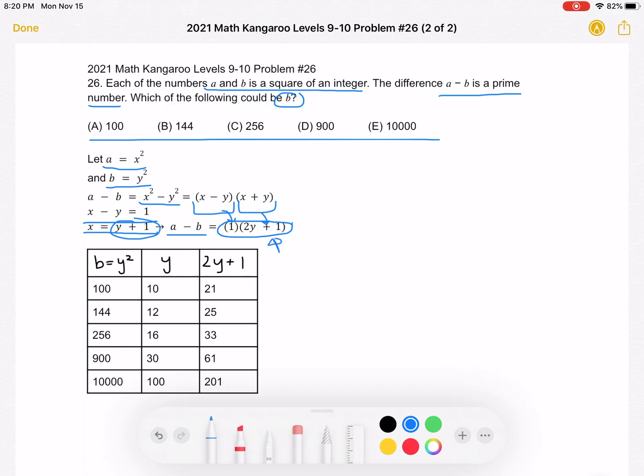this quantity right here, which again is equal to A minus B, which is a prime number, is equal to 21. 21 is not prime. That's not correct.